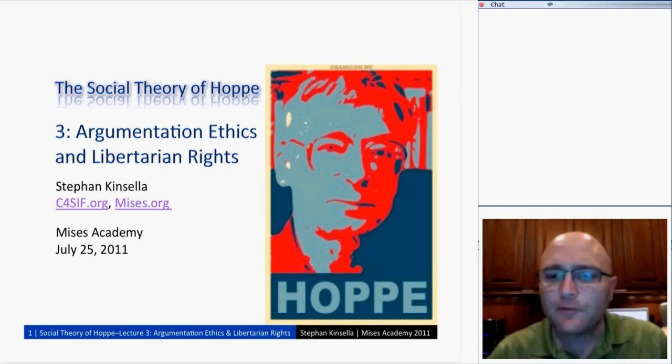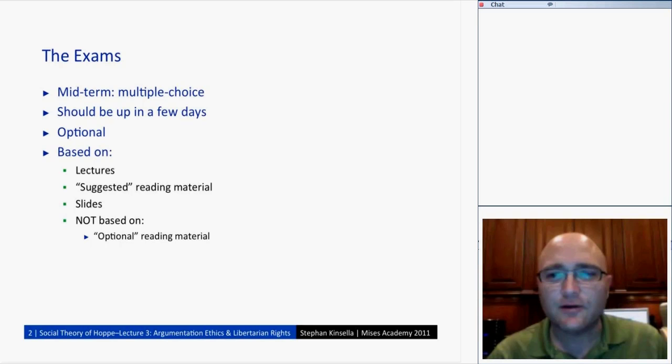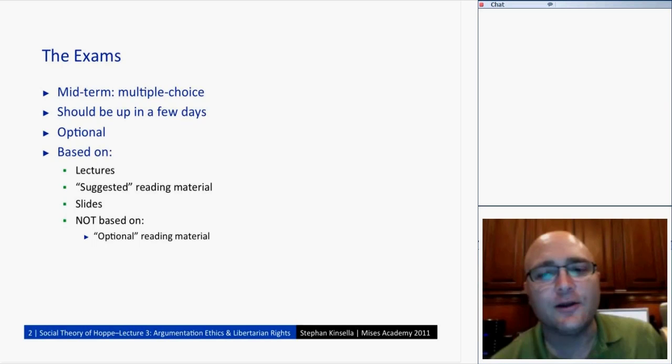Before we start, I'm curious — who here read more than the required or suggested reading, into the more optional reading? I'm just curious how many students have actually read into the argumentation ethics literature beyond the basic stuff I recommended.